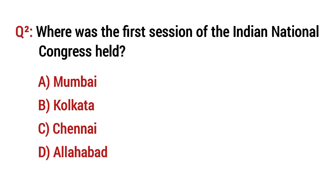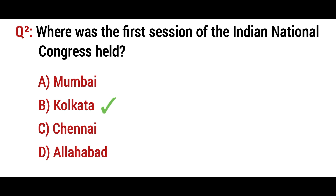Question number 2: Where was the position of the Indian National Congress held? The right option is B: Kolkata in 1885.